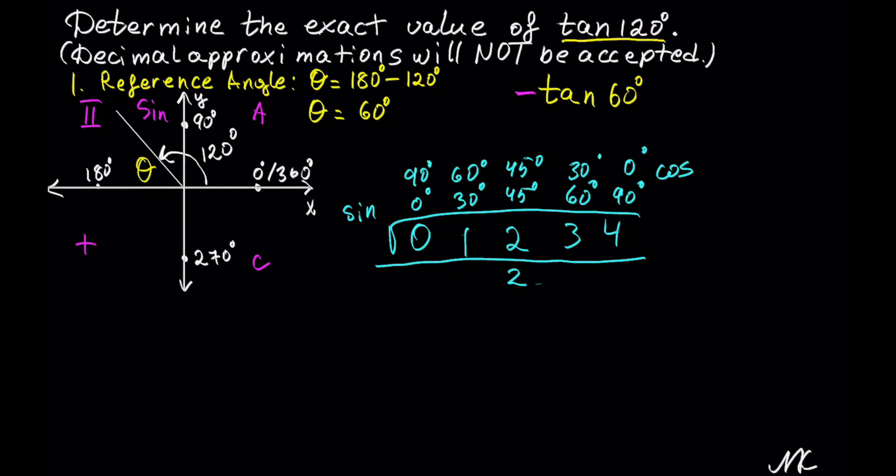The only hiccup that this table gives us is that it doesn't show tangent right away, but we can easily calculate tangent of 60 degrees by taking ratio for sine of 60 degrees and dividing it by ratio for cosine of 60 degrees. This is the tangent identity.